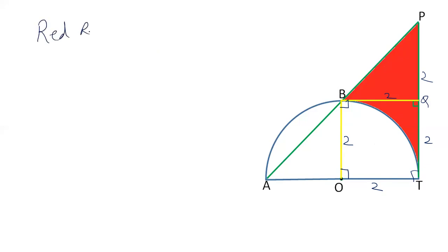Red region is equal to area of square OBQT plus area of triangle PBQ minus area of sector OBT.